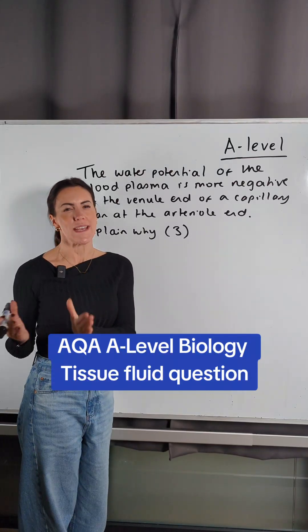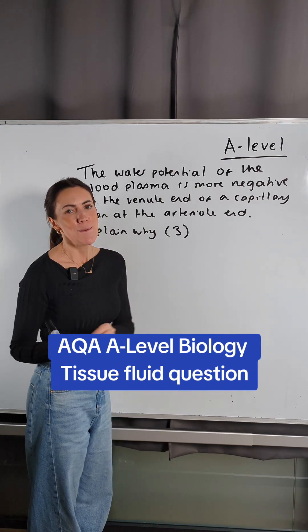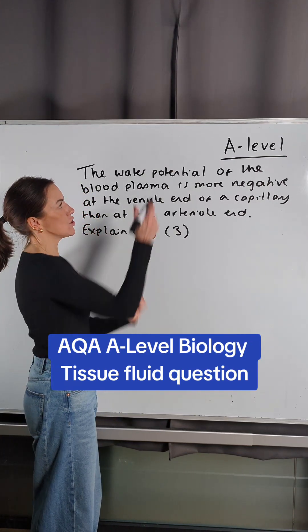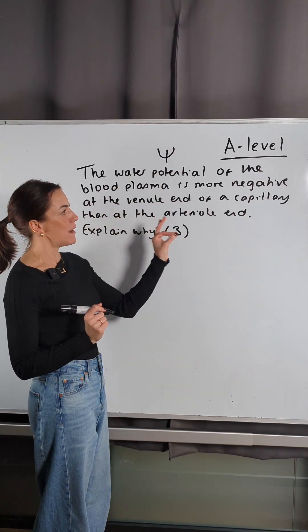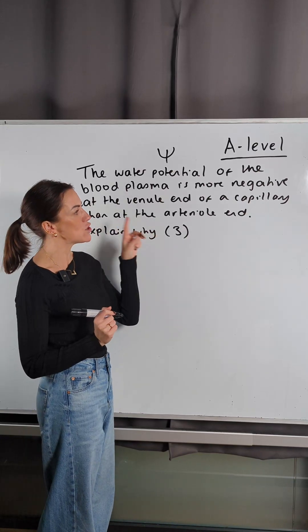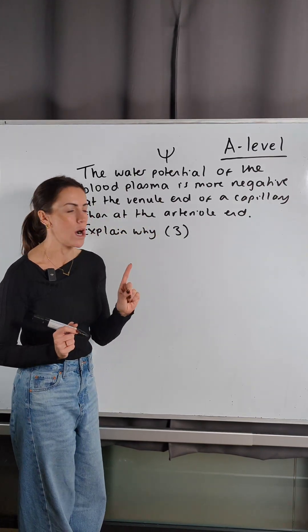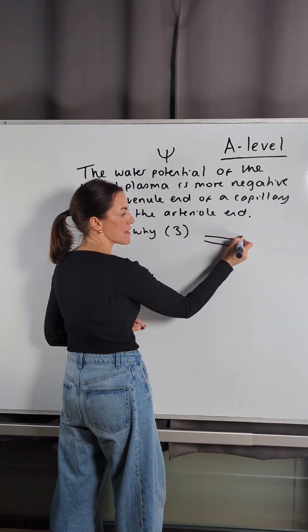This question on tissue fluid, which I know is a really tricky topic in year 12, and if you're in year 13, make sure you do this question with me for revision. It says the water potential of the blood plasma is more negative at the venule end of a capillary than at the arterial end. Explain why.